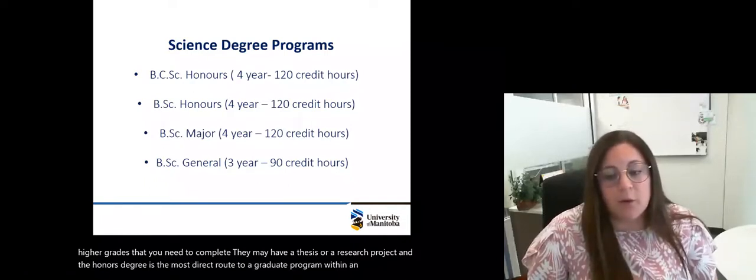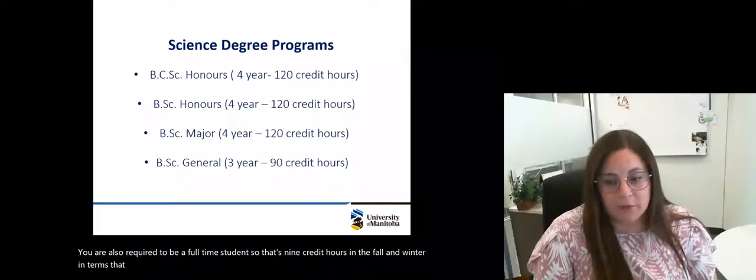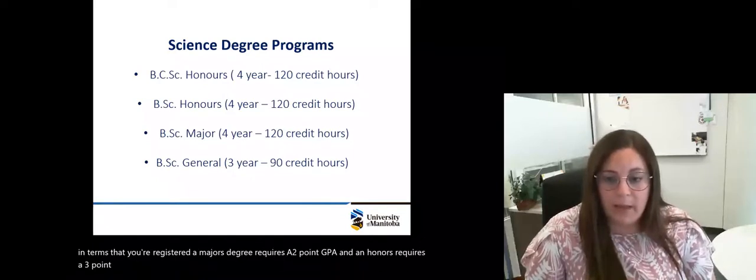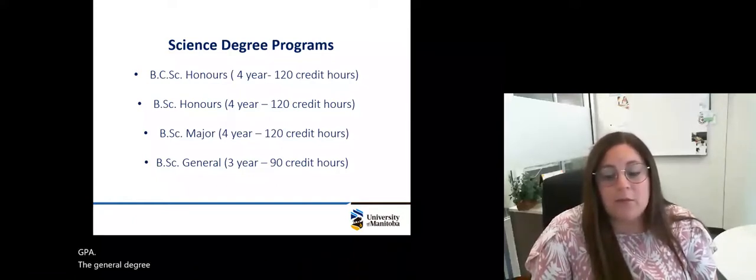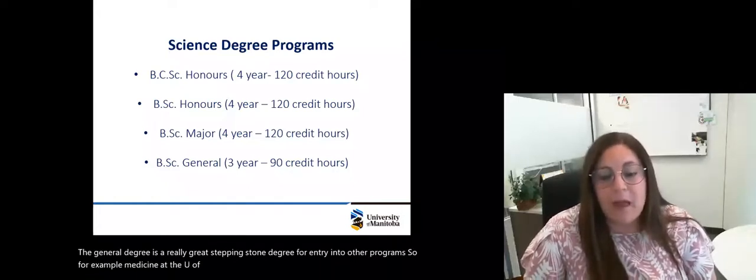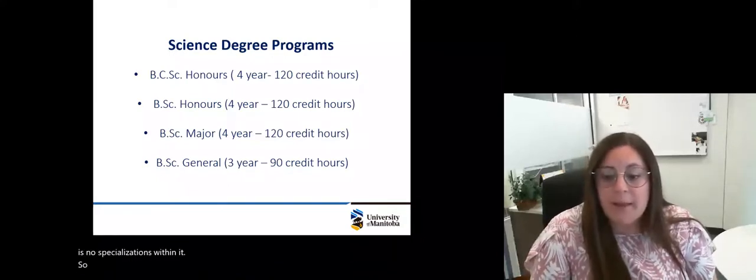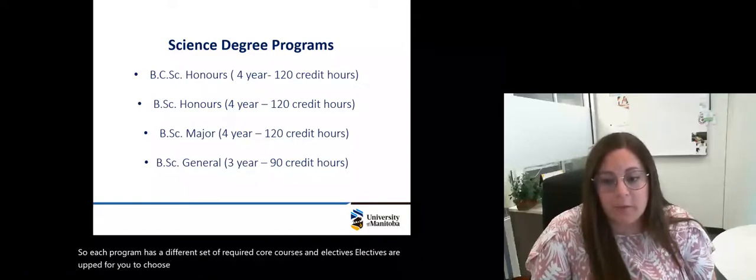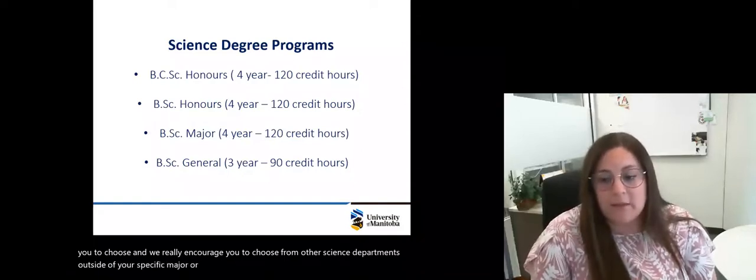Within an honors degree, you are also required to be a full-time student. So that's nine credit hours in the fall and winter terms that you are registered. A majors degree requires a 2.0 GPA and an honors requires a 3.0 GPA. If you are interested in doing psychology honors, it's a 3.5 GPA. The general degree is a really great stepping-stone degree for entry into other programs like Medicine at the U of M. However, it is a general knowledge-based degree, so there is no specializations within it. Each program has a different set of required core courses and electives, and we really encourage you to choose from other science departments outside of your specific major or even faculties outside of science.